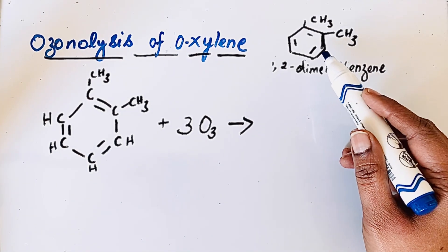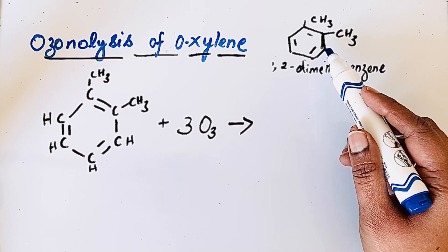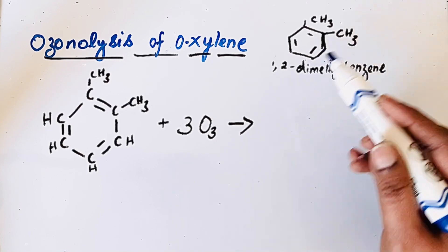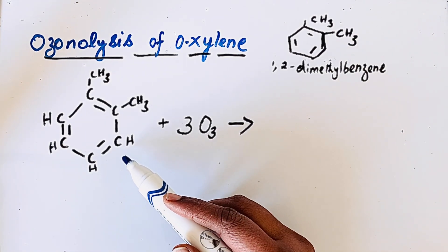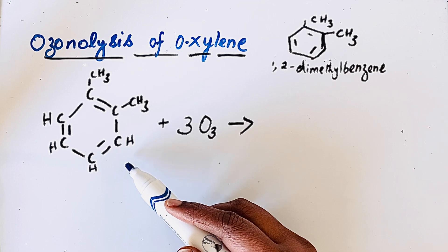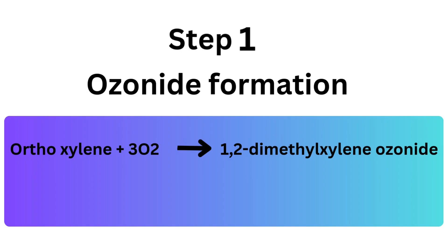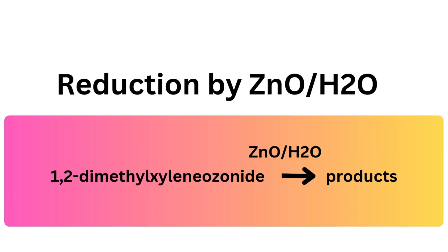Here, instead of the condensed structure, let us use the complete structure of ortho-xylene. During ozonolysis, any unsaturated organic compound reacts with ozone to first form an ozonide. Since the ozonide is an unstable intermediate, it reacts with zinc and water to produce an aldehyde or ketone, depending on the alkene used.